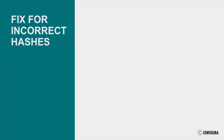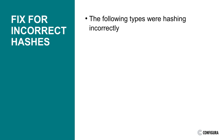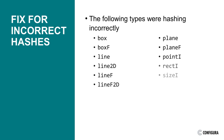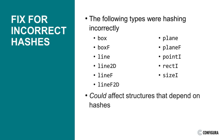An error has been found in the virtual machine that was causing certain types to hash less effectively than intended. With 13.5 comes a fix to the default hashing of these types. This shouldn't have any effect on the use of these types, and the only change that should occur is an improvement to the distribution of these values when stored in data structures that depend on these hashes, such as maps and sets.